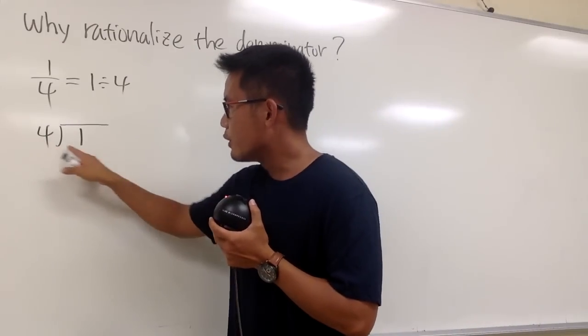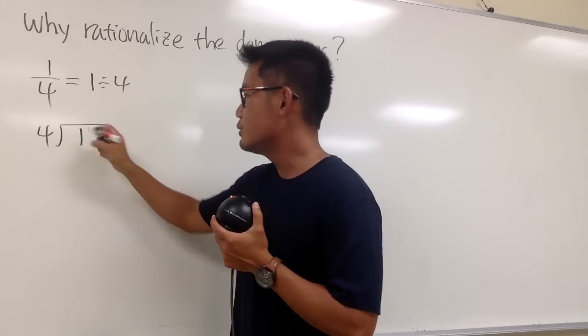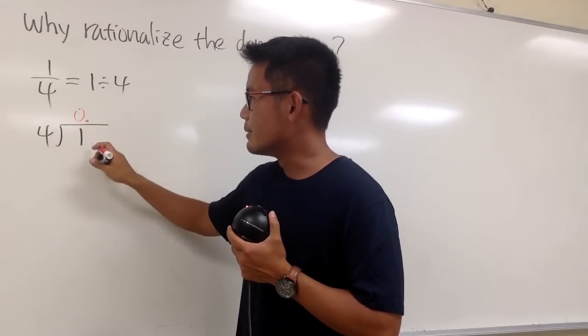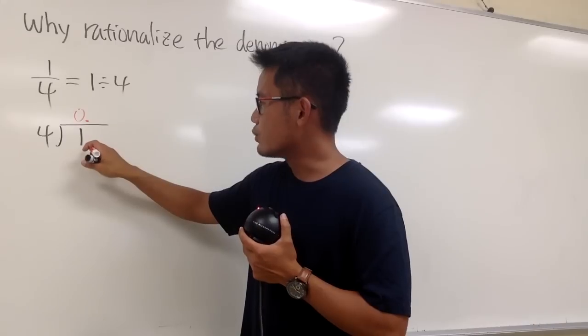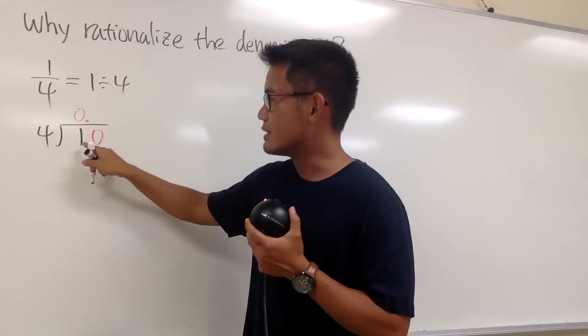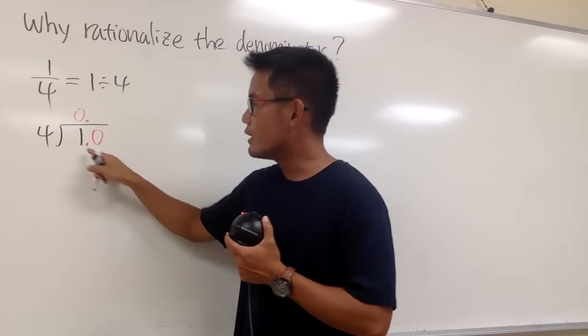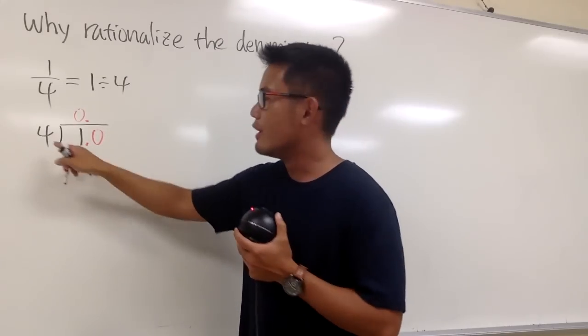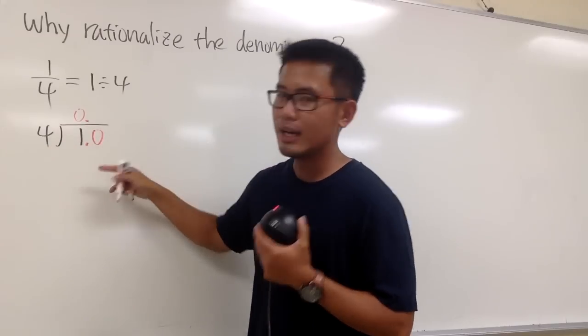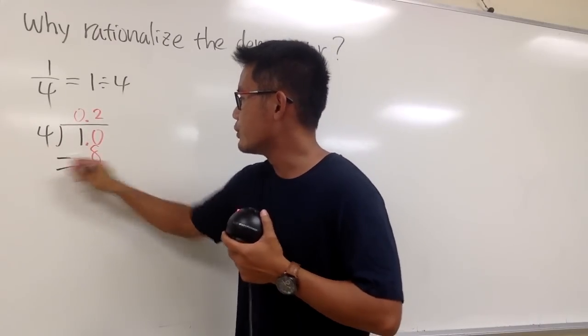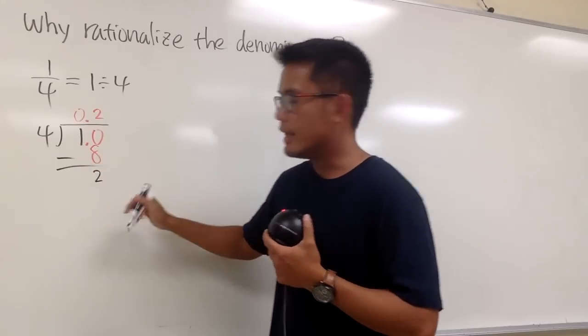4 goes into 1 how many times? 0 times. Let's put 0, and now it's going to continue. Put the decimal point right here, and you put 1 as 1 point. You can put on 0 because 1 is the same as 1 point 0. Now you can look at this as 10, and you ask yourself, 4 goes into 10 how many times? Well, twice, because 2 times 4 is 8.